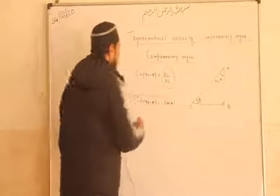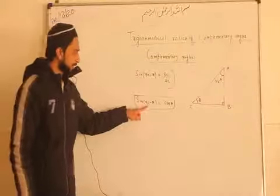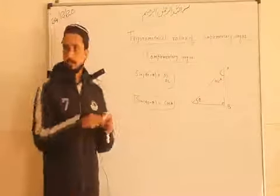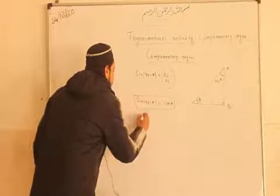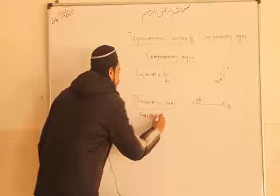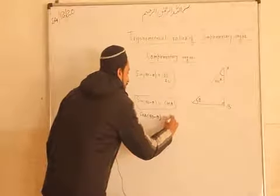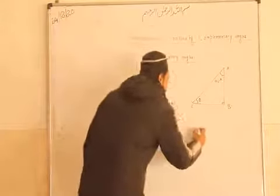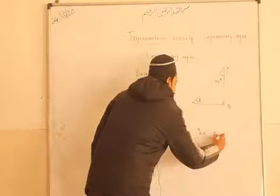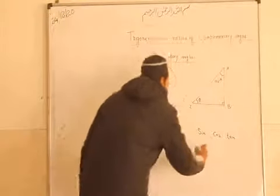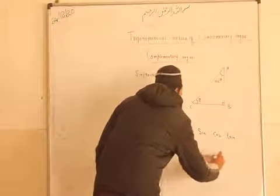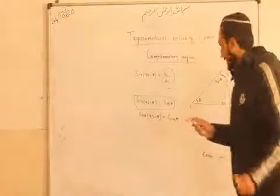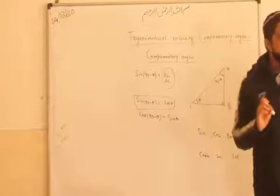So, these are the complementary angles. Sine of (90 minus theta) is equal to cos theta. And if we are taking cos of (90 minus theta), that will be equal to sin theta. So, cos (90 minus theta) is equal to sin theta. So, this is the only relation of the complementary angle. These are six trigonometrical ratios and you must remember which are the complement of each other.